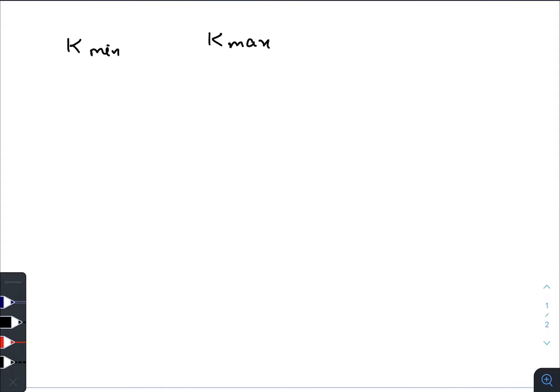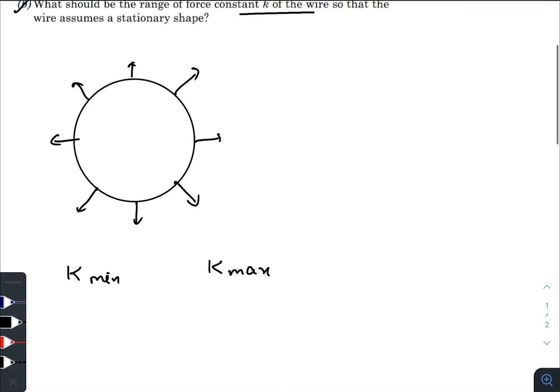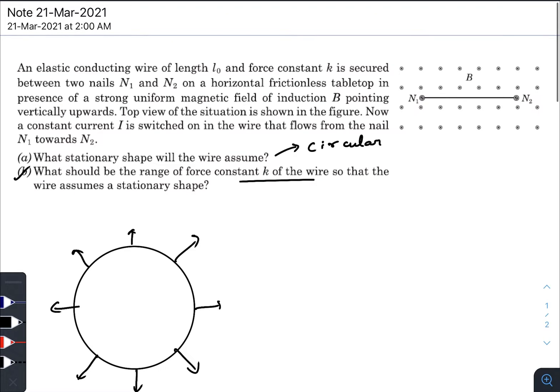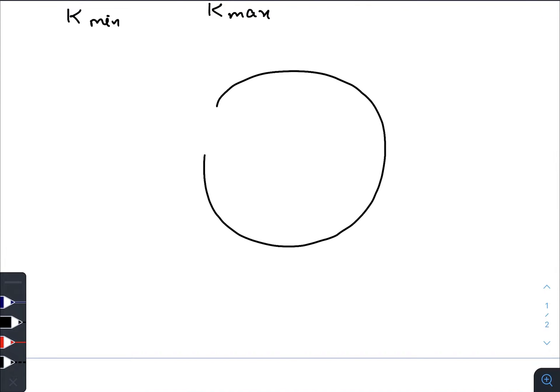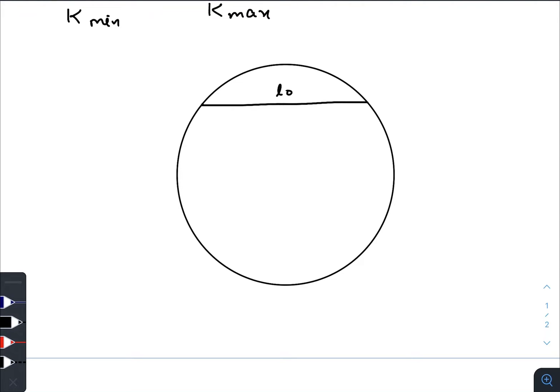What is the case of minimum k? Now if the current is increased, if we are increasing the current, the wire will start taking a shape of a circular portion, of a circular arc actually. Let this one be the actual length l₀.